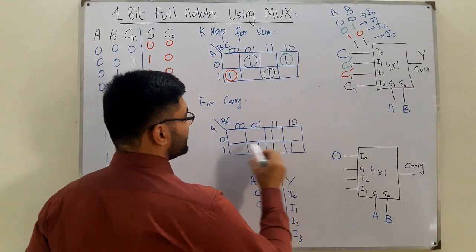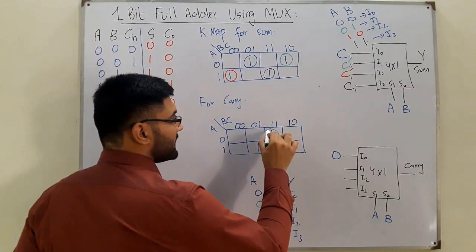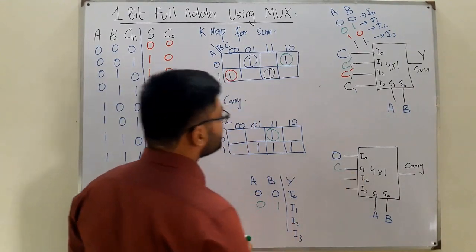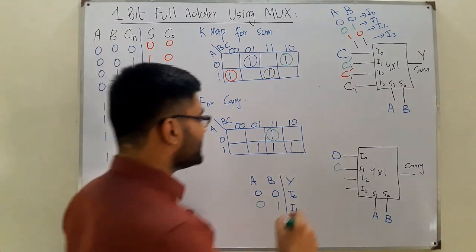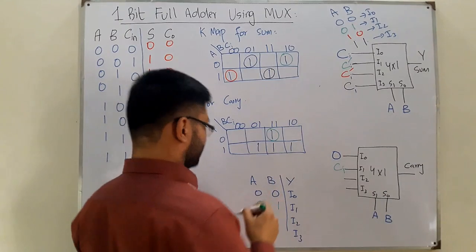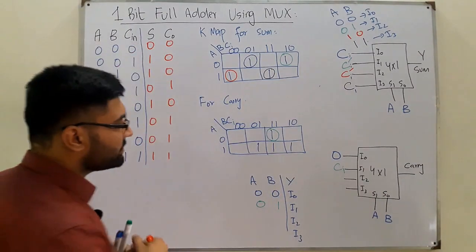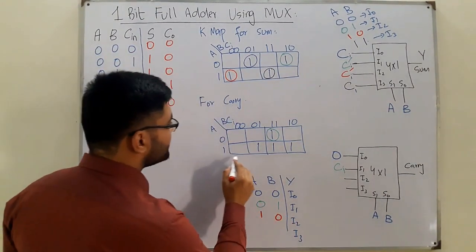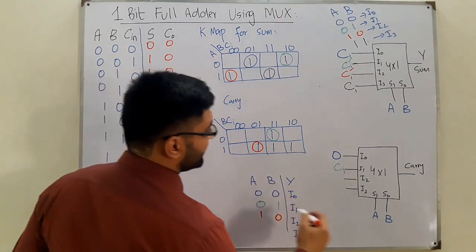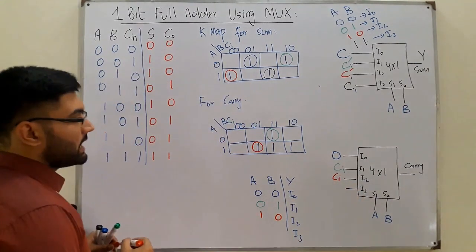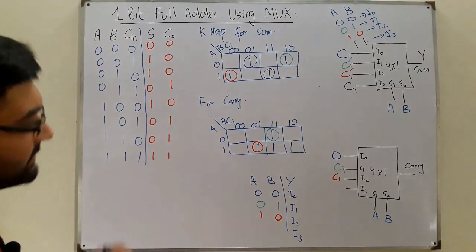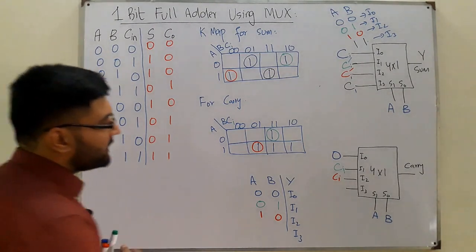When A=0 and B=1 (I1), we have those two blocks where only one is high — that's when C=1, so I1 = C. For A=1, B=0 (I2), that block has a one only when C is high, so I2 = C.